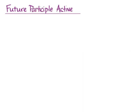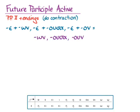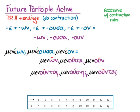The future participle active again uses the rules and endings we know from epsilon contracts with the first principal part. We do the contraction and get the endings: ōn, ousa, oun. When we do the same operation with meno — the second principal part stem, which uncontracted is mene- — we do the contraction, then apply the accent rule: put the accent on the uncontracted form and then determine what that means for the contracted form. We get: menōn, menousa, menoun. And going to the genitive, we get: menontos, menousēs, menontos.